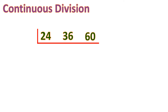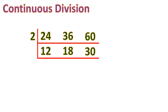Since all three are even, we can divide by 2. So: 24 ÷ 2 = 12, 36 ÷ 2 = 18, and 60 ÷ 2 = 30. Since 12, 18, and 30 are all still even, we divide by 2 again: 12 ÷ 2 = 6, 18 ÷ 2 = 9, and 30 ÷ 2 = 15. That's why it's called continuous division — it continually divides the numbers.